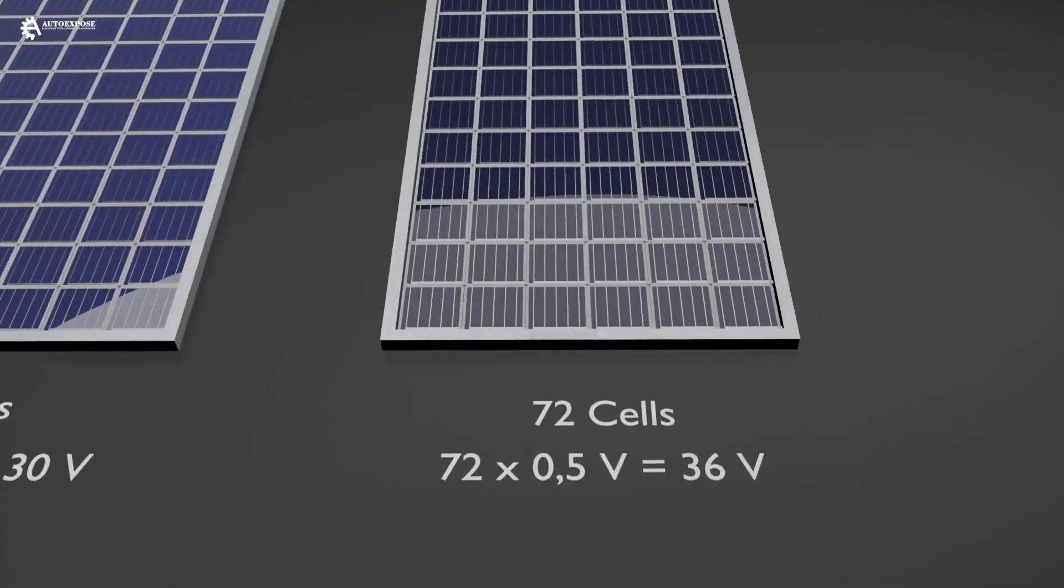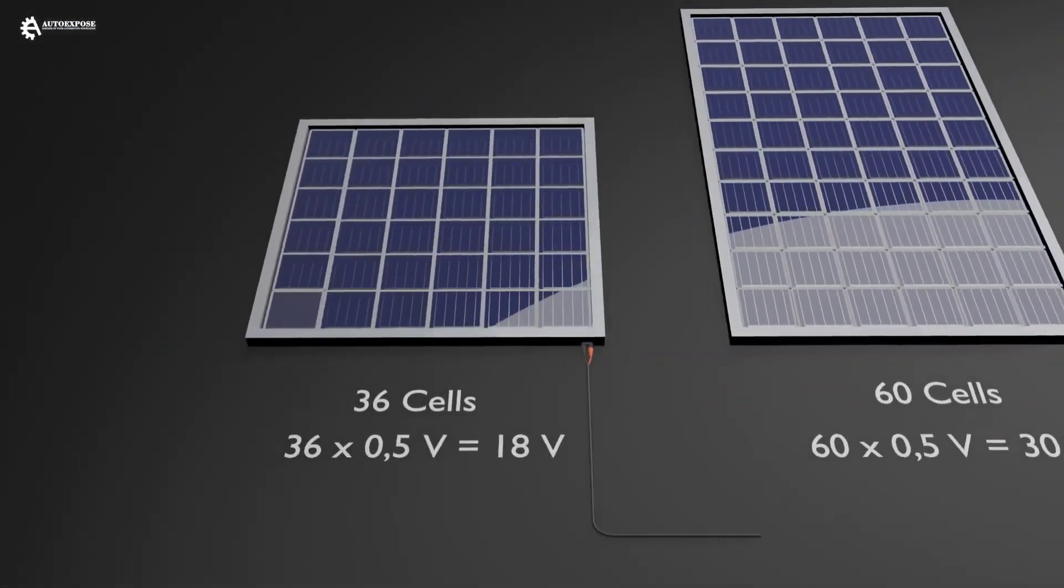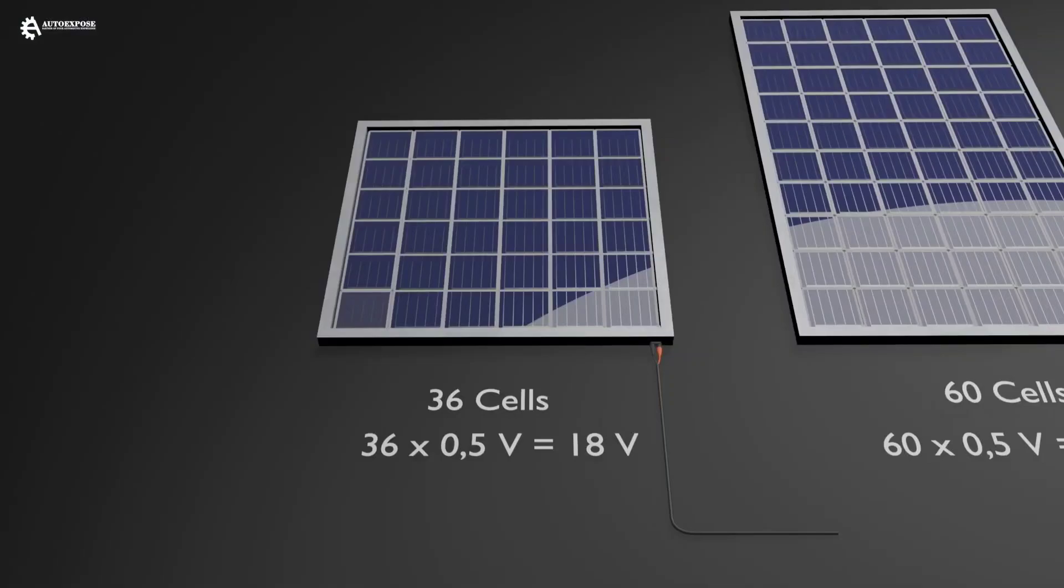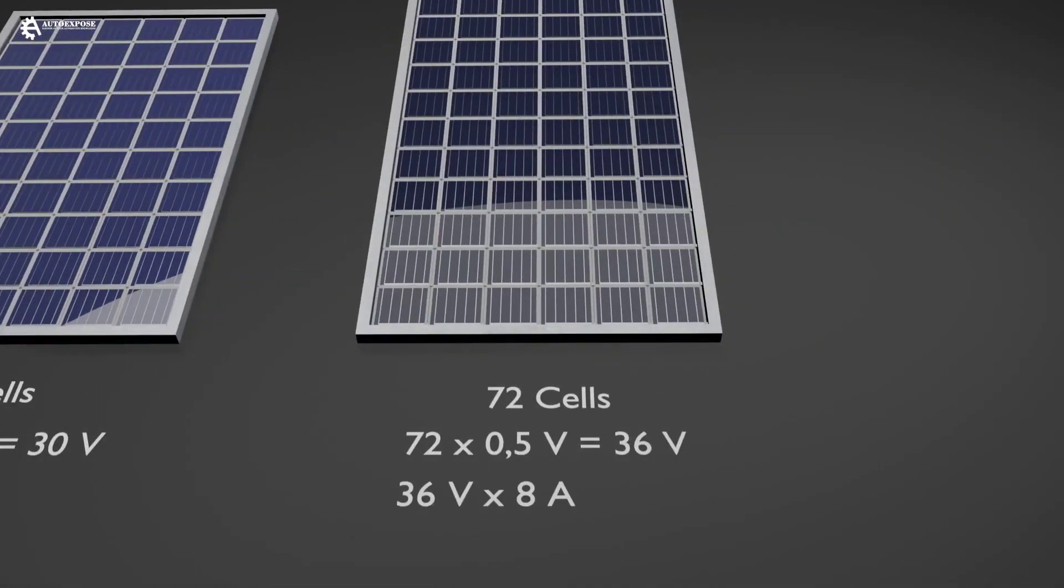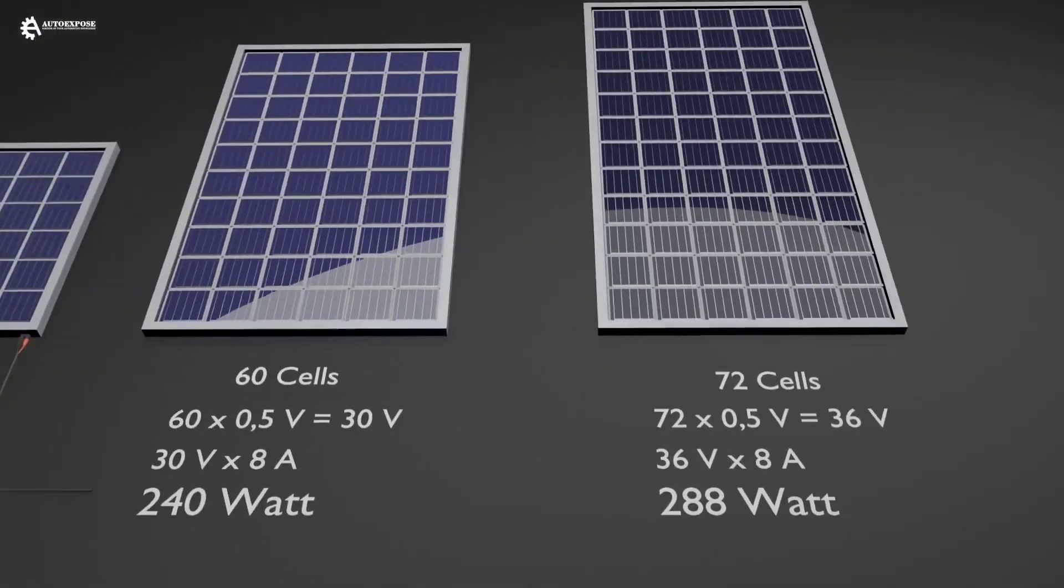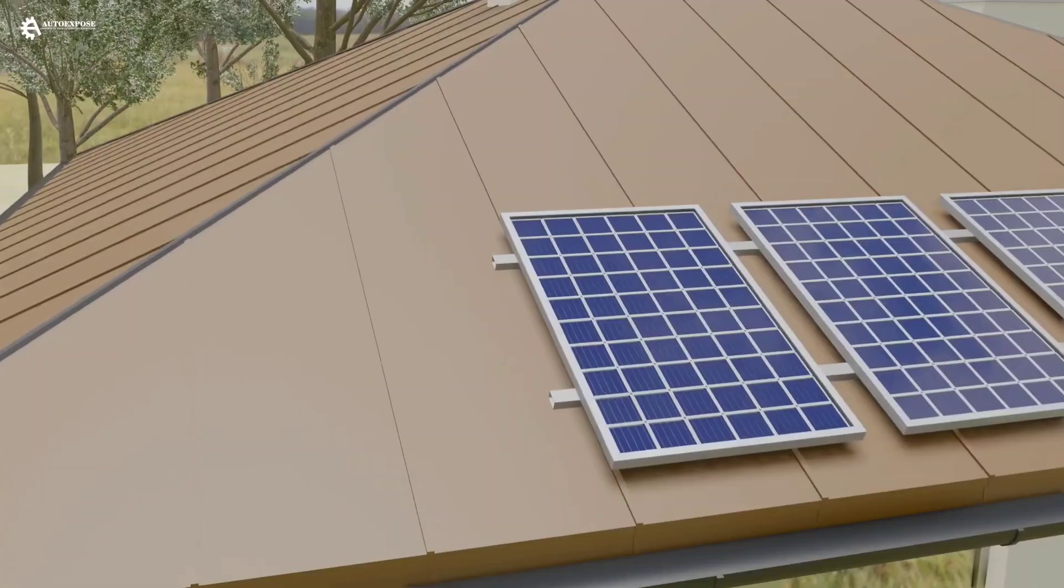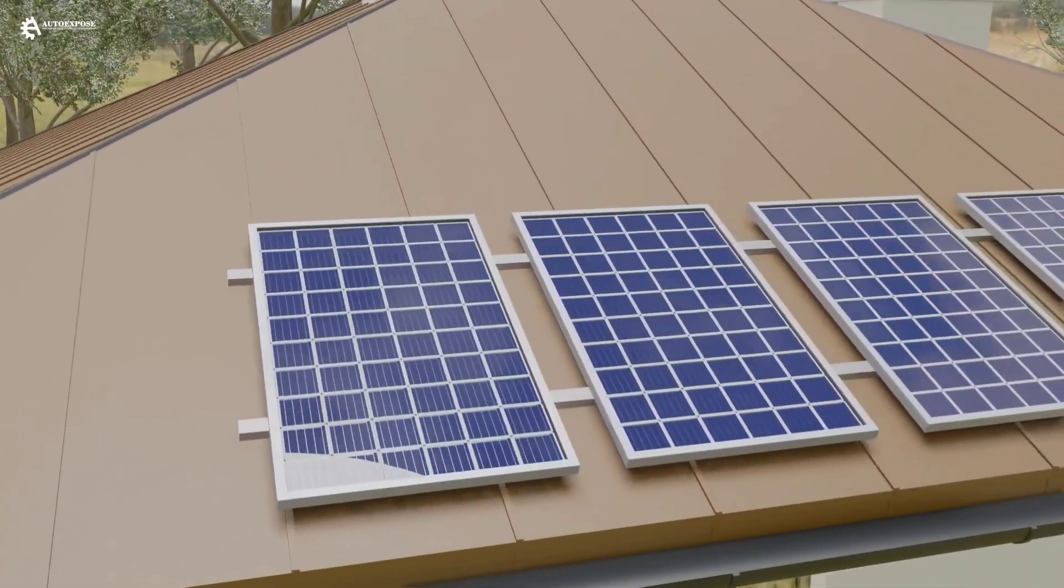From there, we can know the power of each solar panel. For a capacity of 36 cells, the power is 144 watt. For the 60 cells, the power is 240 watt. And the 72 cells, the power is 288 watt. It does look small. For this reason, in a household scale usually uses 3 to 4 solar panels.